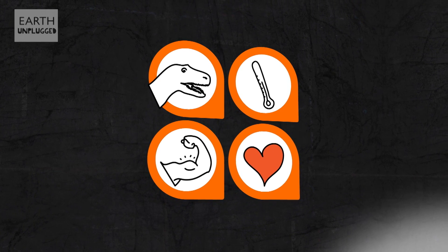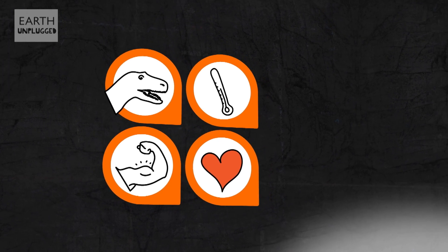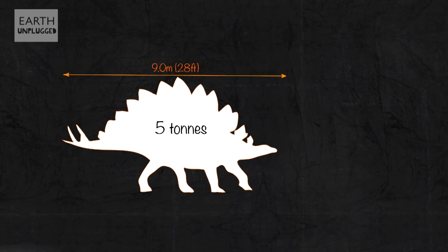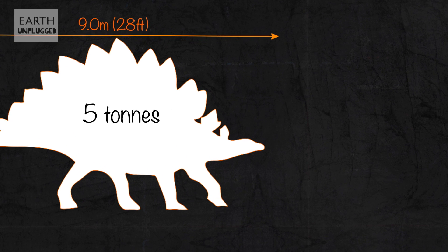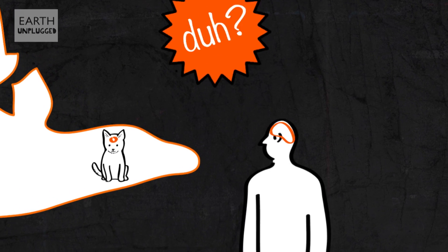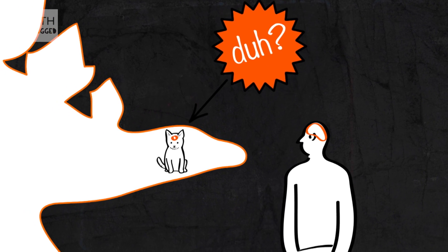And mostly showing off to impress the other Stegosauruses. One thing scientists do agree on is that despite its impressive looks and impressive size, measuring up to 9 meters long and weighing nearly 5 tons, Stegosaurus wasn't the sharpest tool in the box. Inside its head was a brain no bigger than that of a modern day kitten.